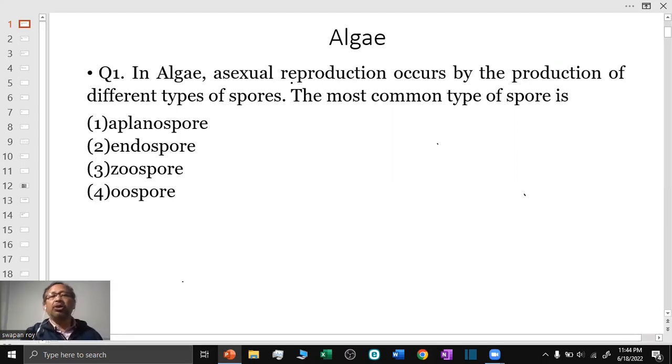Solution of important questions for NEET from algae. Question 1: In algae, asexual reproduction occurs by the production of different types of spores. The most common type of spores is zoospores, which are motile spores.